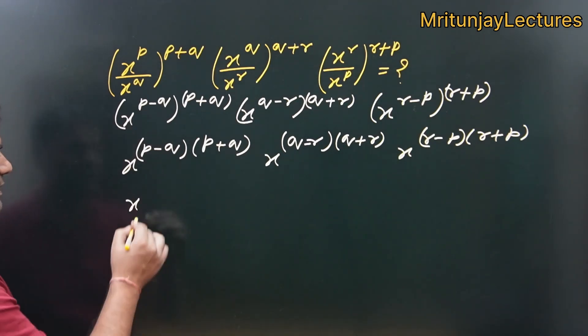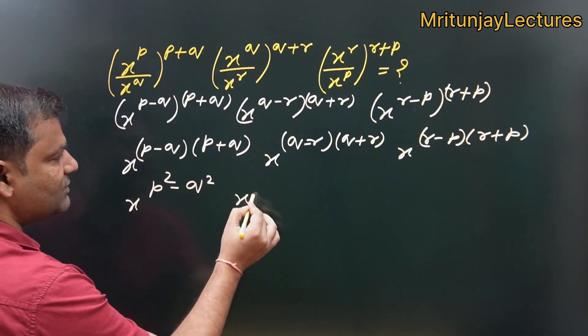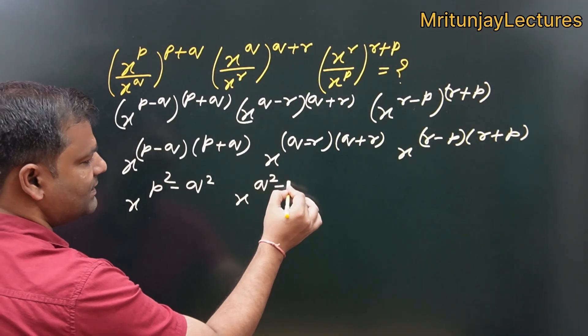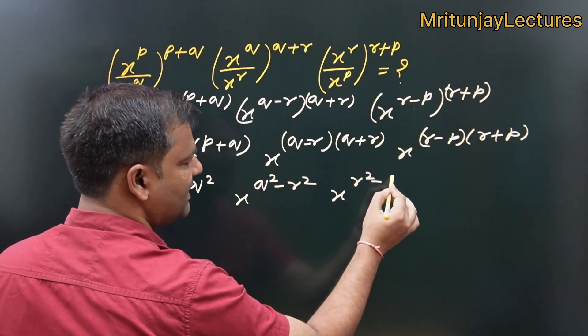So, that one written p square minus q square. Here x to power q square minus r square. And that one written x to power r square minus p square.